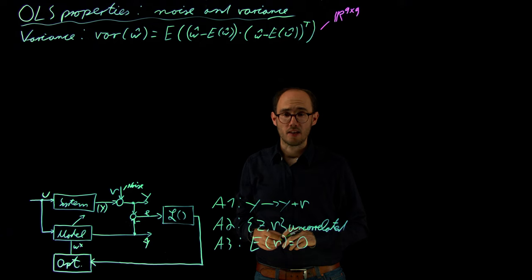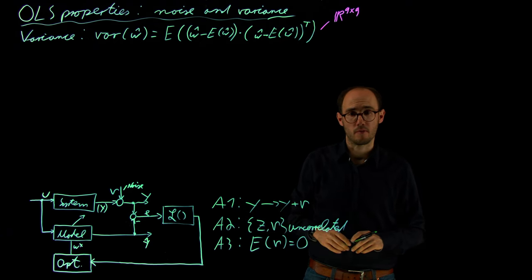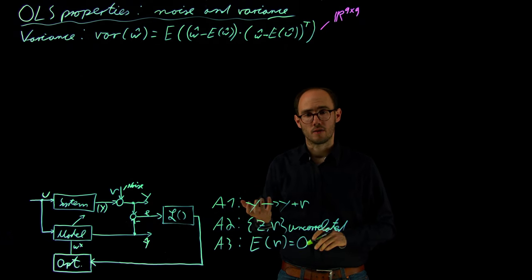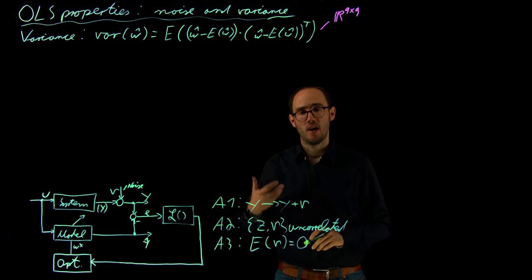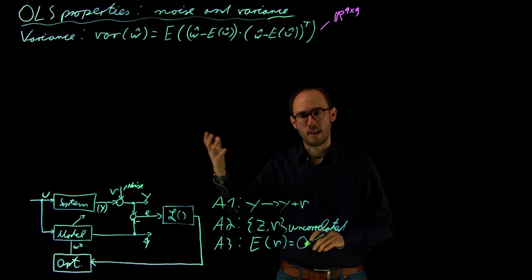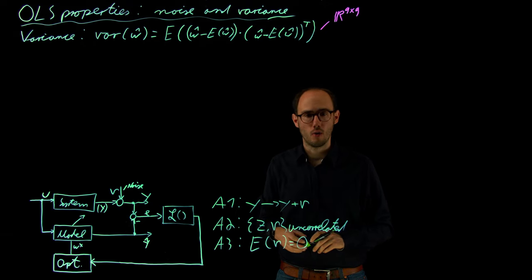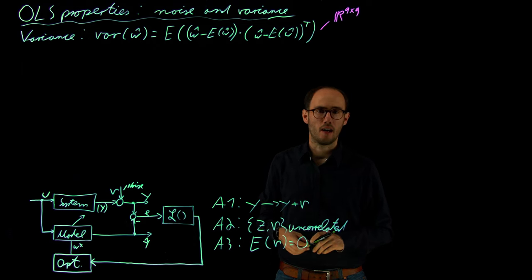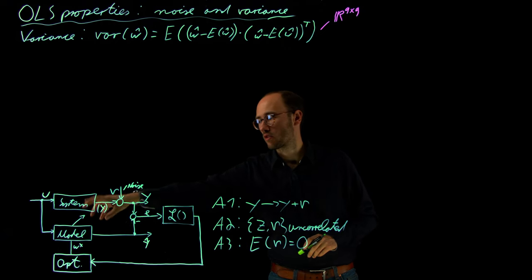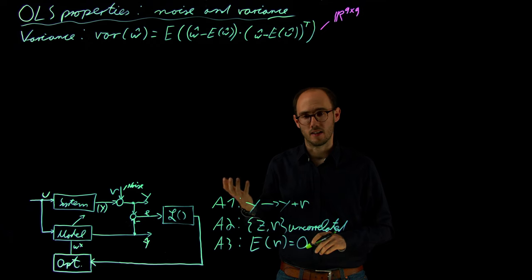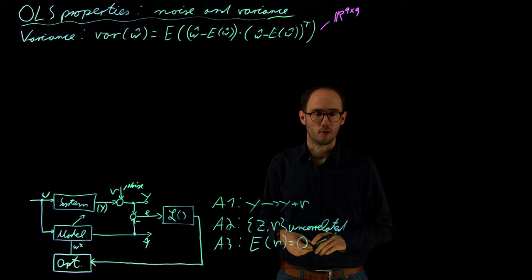What is the interpretation of the variance of the parameter vector w_hat, which we identify by least squares using data? The interpretation is how uncertain it is to identify certain parameters. We are interested in a variance matrix with rather low values inside, because they would indicate that we are able to identify the parameter vector with a rather high, accurate probability.